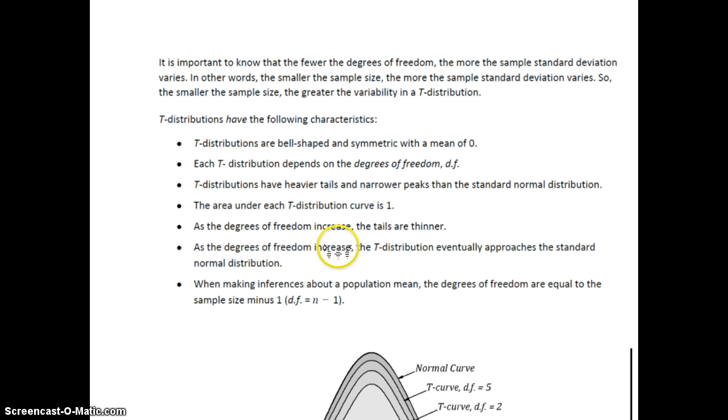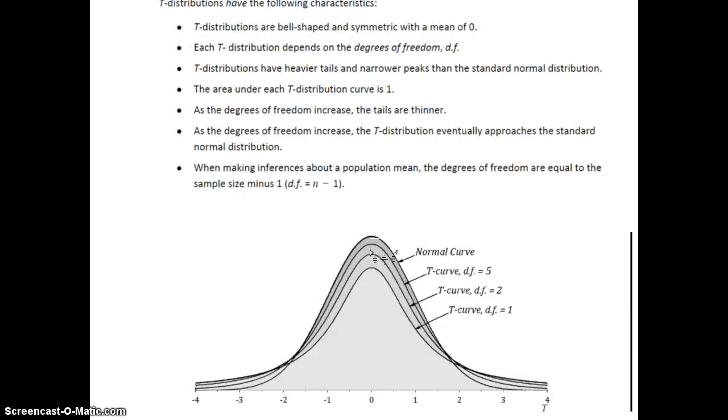As the degrees of freedom increase, the tails are thinner. In other words, closer to the x-axis. As the degrees of freedom increase, the t-distribution eventually approaches the look of a standard normal distribution. And when making inferences about population mean, the degrees of freedom are equal to the sample size minus one.